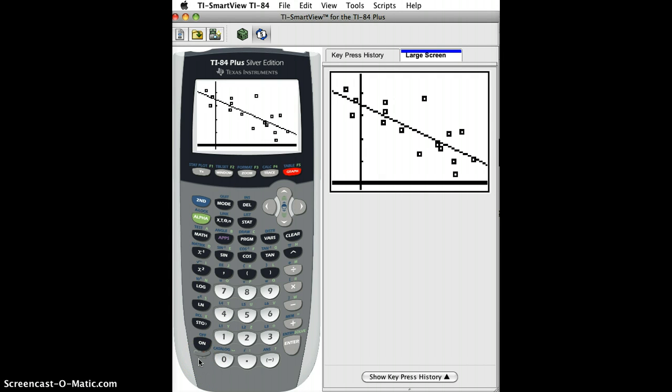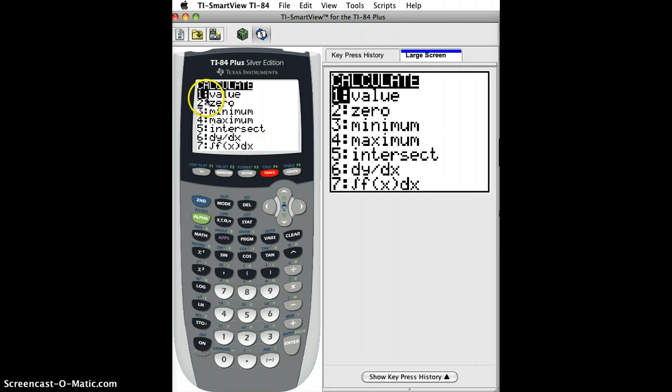Now, next question is what if you want to find out what's the predicted value that this line gives for a particular explanatory variable? The easiest way I could do that is I could just do second calc and value.